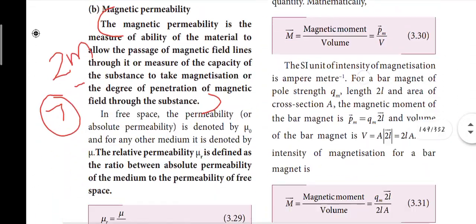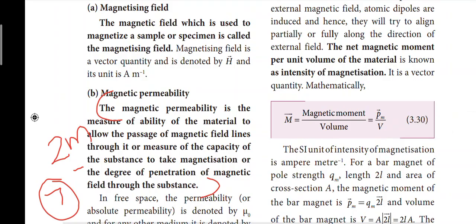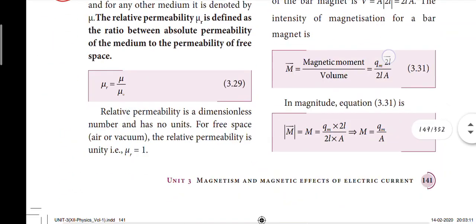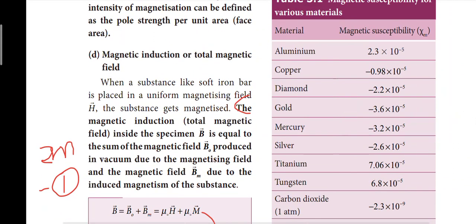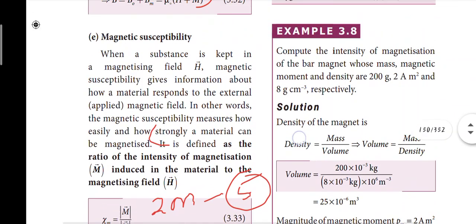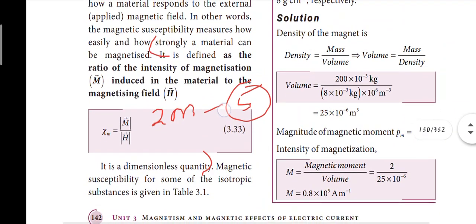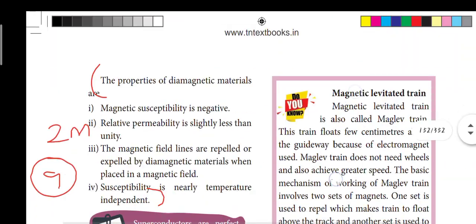Next, page 141: magnetic permeability. Also the first two-mark question — magnetic susceptibility. The equation is: χm is equal to the modulus of M vector divided by the modulus of H vector. It is a dimensionless quantity.